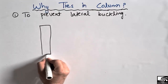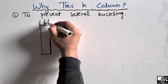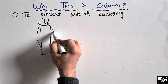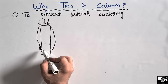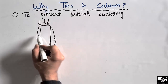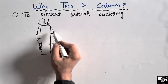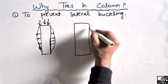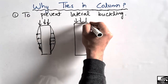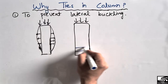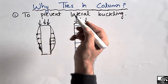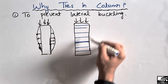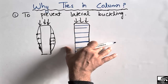Consider any column loaded with a distributed or concentrated load. Upon loading, the column will try to buckle in the lateral direction, depending on support conditions. To resist this, we provide lateral ties. With ties in place, this transverse reinforcement will not allow the column to buckle in the lateral direction. This is the first reason to provide lateral ties in a column.